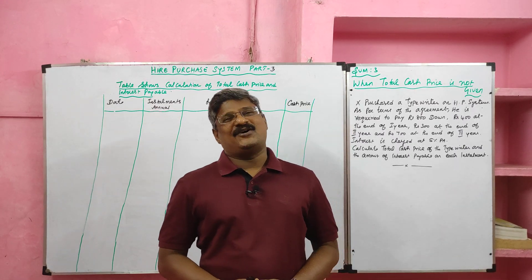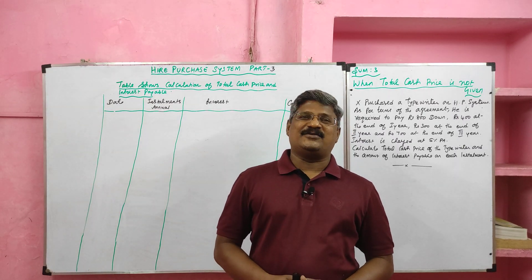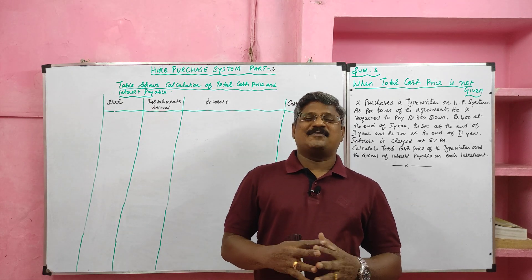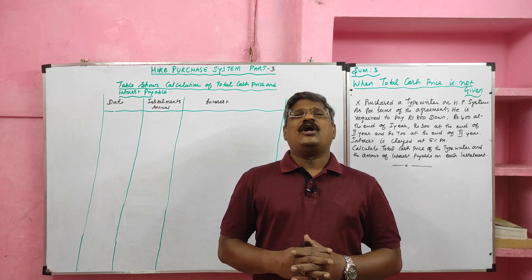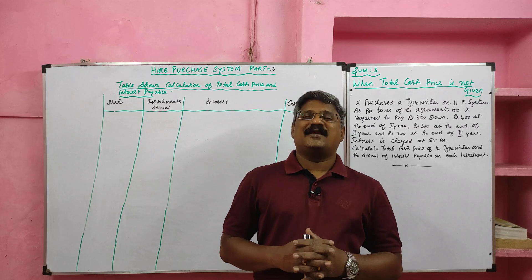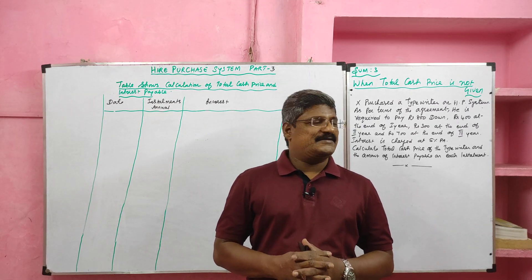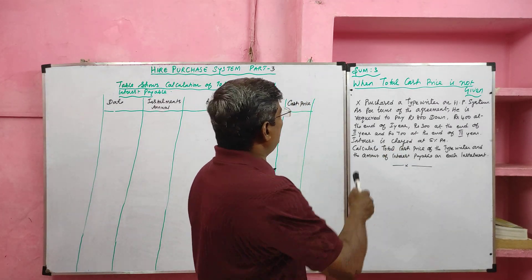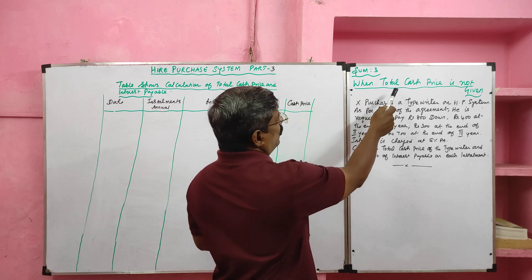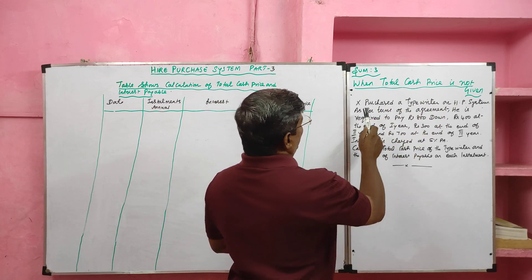Students, now we will solve the third problem in relation to hire purchase system. In this problem, total cash price is not given — we have to ascertain it. Look at the problem: Sum number 3, when total cash price is not given. This is a very important problem.